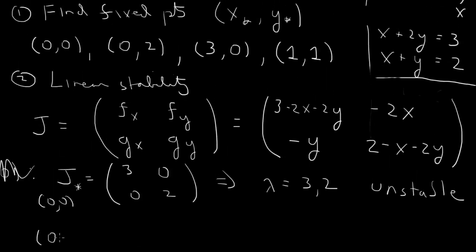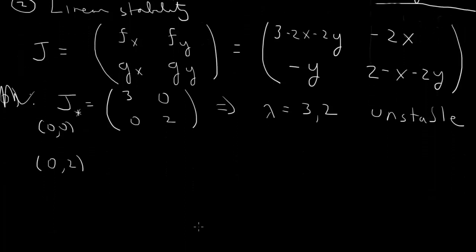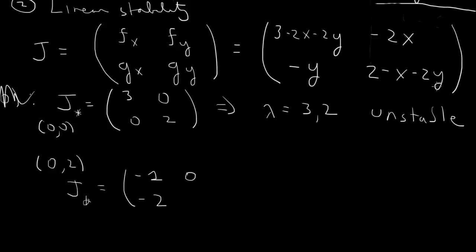At the fixed point (0, 2), with x equals 0 and y equals 2, the Jacobian becomes: first row (−1, 0), second row (−2, −2). This is a lower triangular matrix, so the eigenvalues are just the diagonal elements: −1 and −2. Both eigenvalues are negative, so this fixed point is stable.